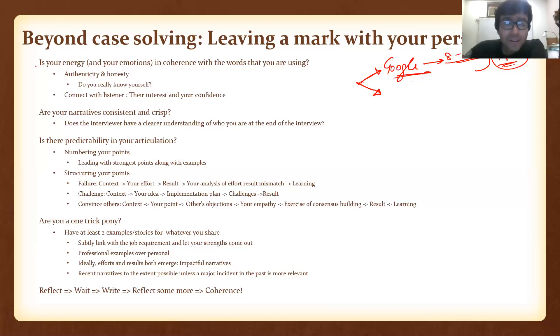Now, five points. First, is your energy and overall emotions in coherence with the words that you're saying? Let's take two examples. Let's say I say, 'I absolutely love case solving.' And the alternative would be, 'I love case solving.' In the first, my body language and overall level of energy is in coherence with the words I'm using. In the second one, not so much. Aspire for the first one.